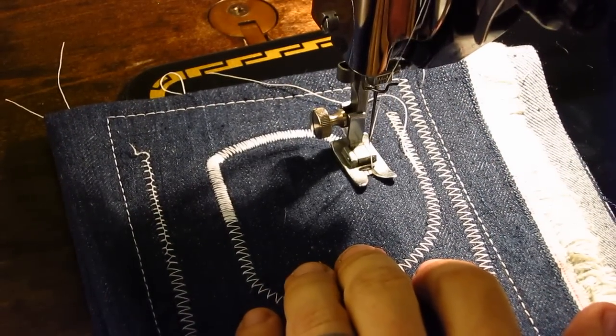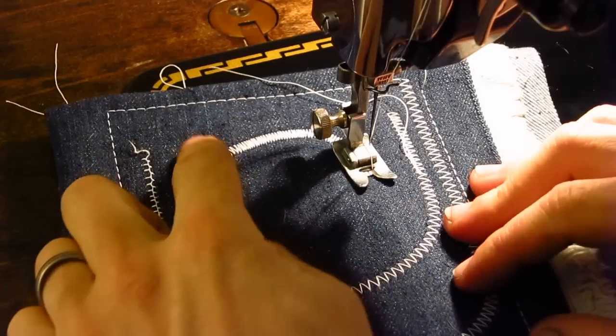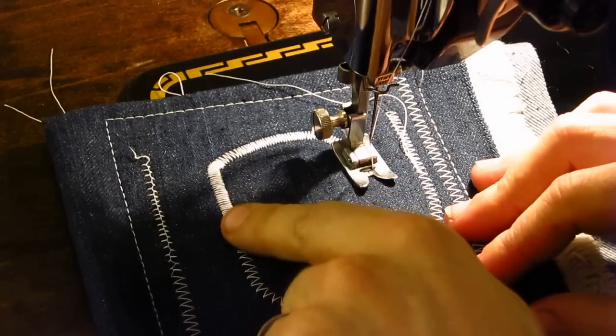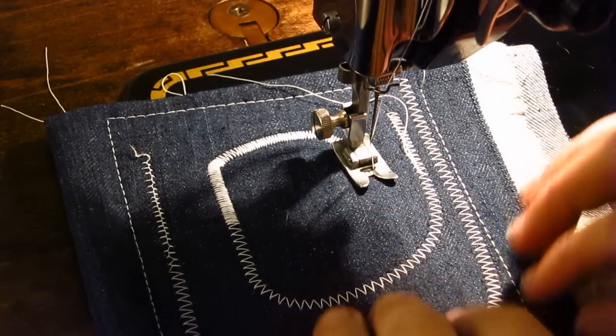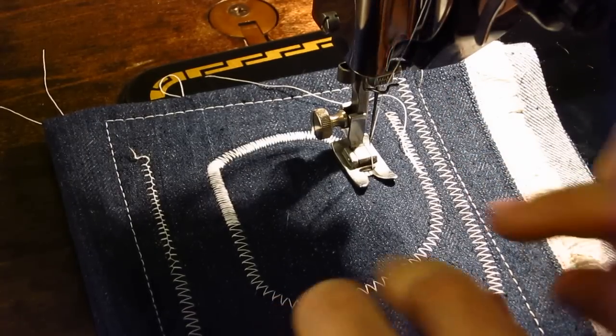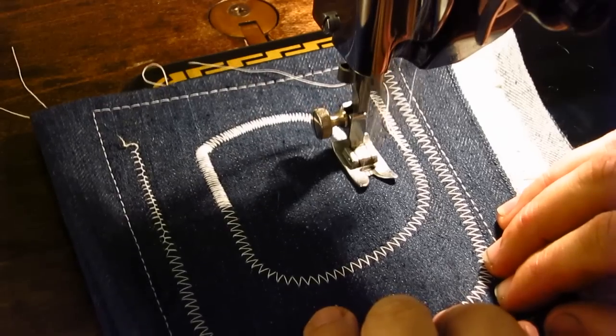And you can do really tight satin stitches on this. You can go even tighter. Now you just got to be mindful of feeding when you're feeding this stuff through. With a satin stitch, you're building up a mound of thread basically, so you're creating this arch above the fabric.